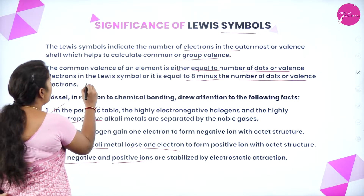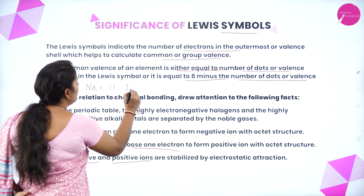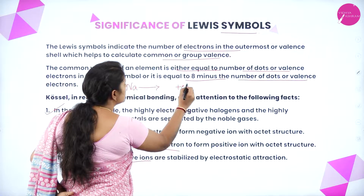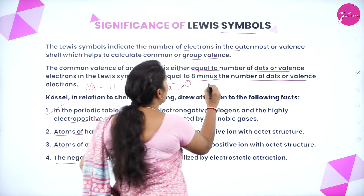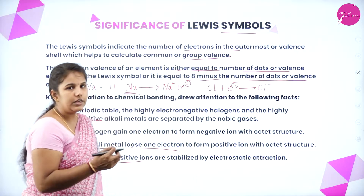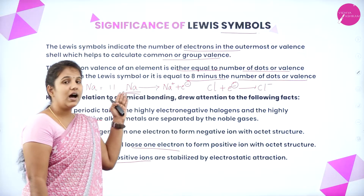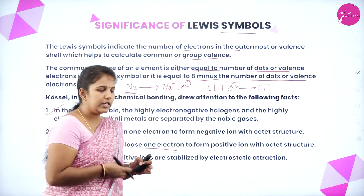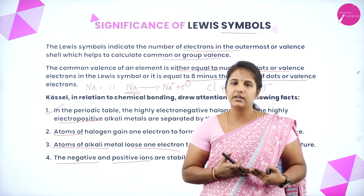The negative and positive ions are stabilized by electrostatic force of attraction. For example, sodium has 11 electrons with only 1 electron in its outermost shell — that is why sodium loses 1 electron and gets a positive charge. Similarly, chlorine will accept 1 electron and become Cl minus. Halogens accept 1 electron to get a stable electronic configuration, while alkali metals lose 1 electron, and both are stabilized by electrostatic force of attraction.